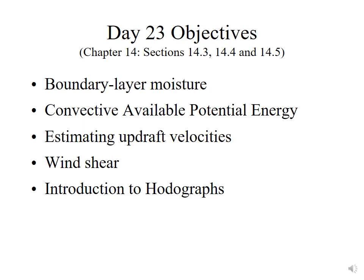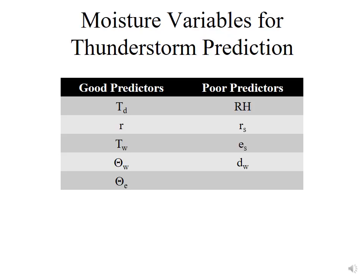We'll actually quantify wind shear. We've talked about it qualitatively, but now we're going to quantify it. We'll introduce a new type of diagram called a hodograph, which can allow you to visually see the wind shear in the atmosphere. Recall that thunderstorm formation requires lift, instability, and moisture.